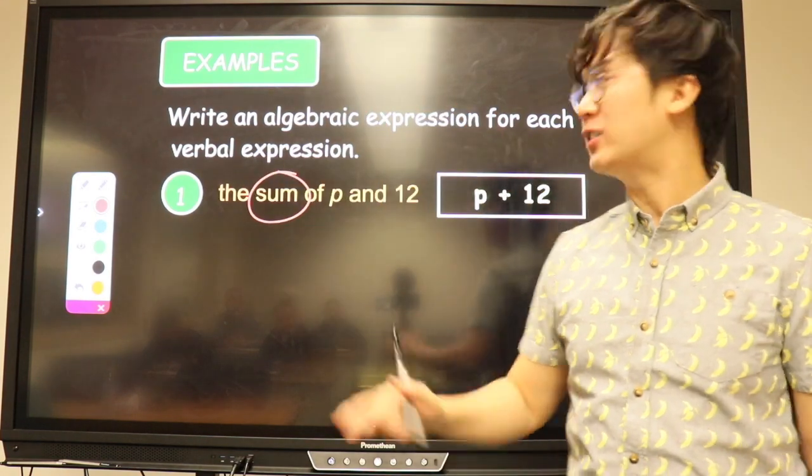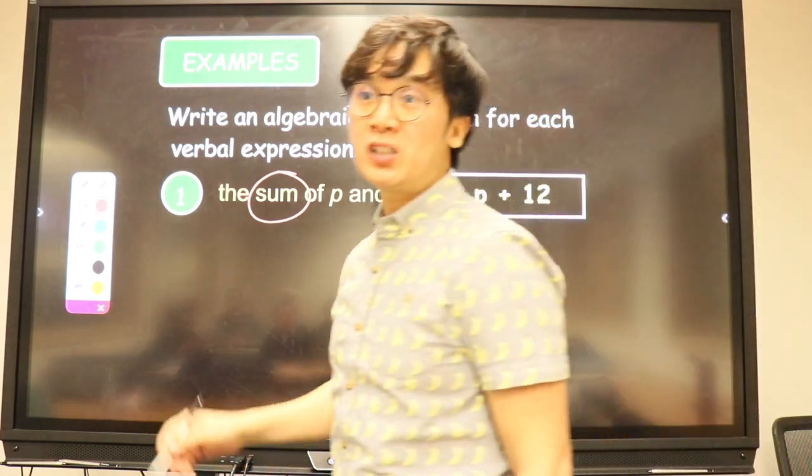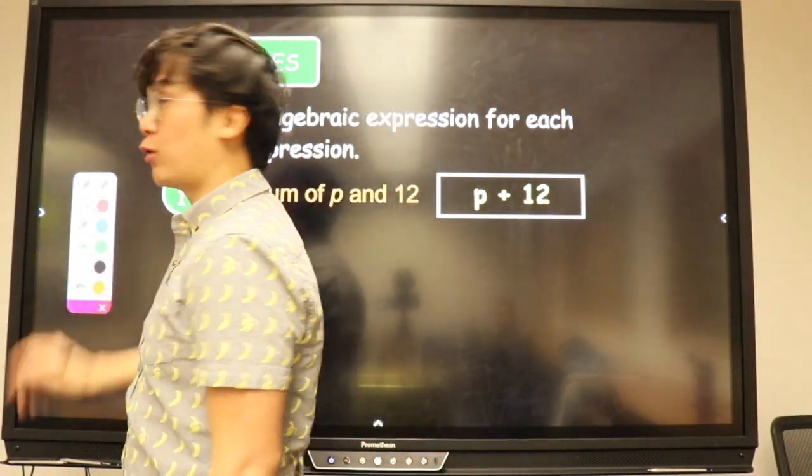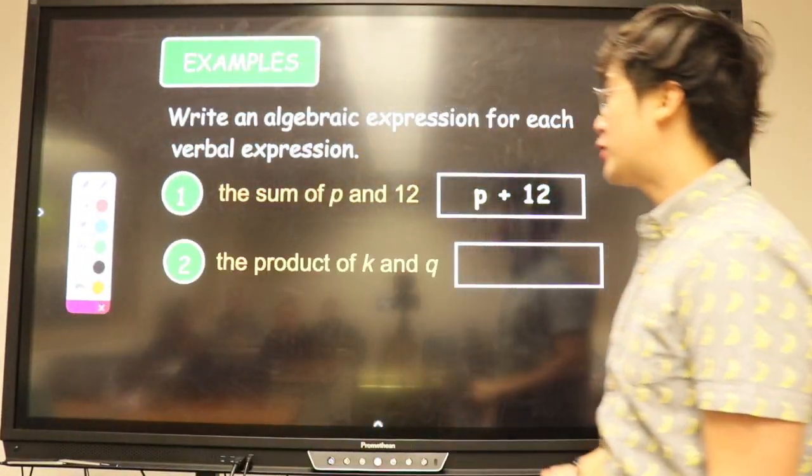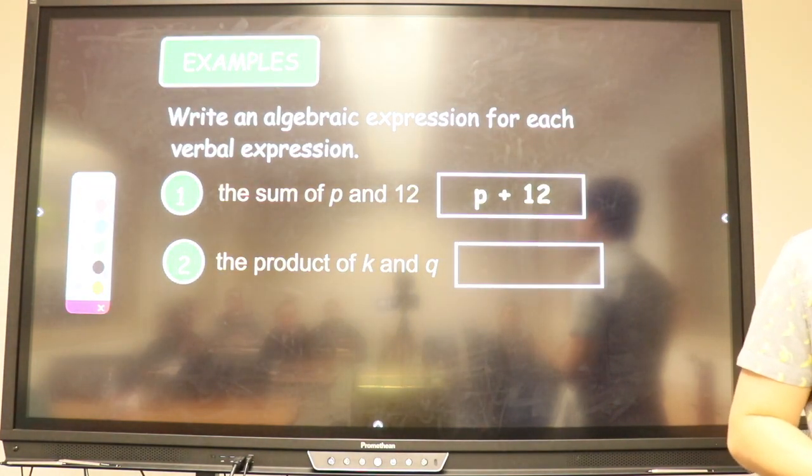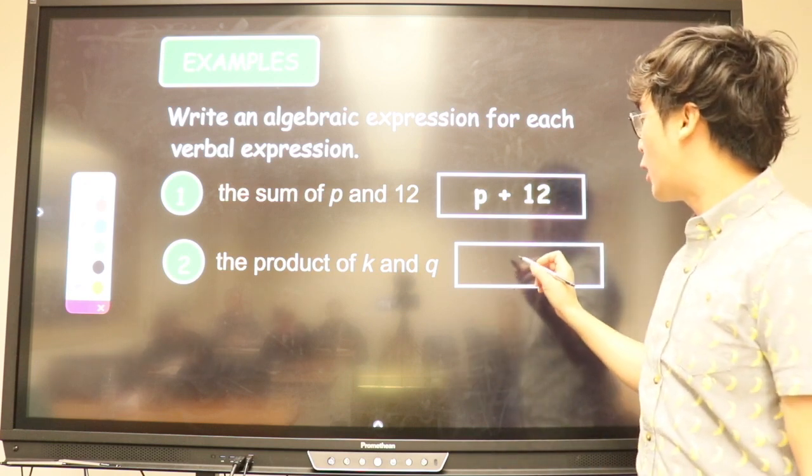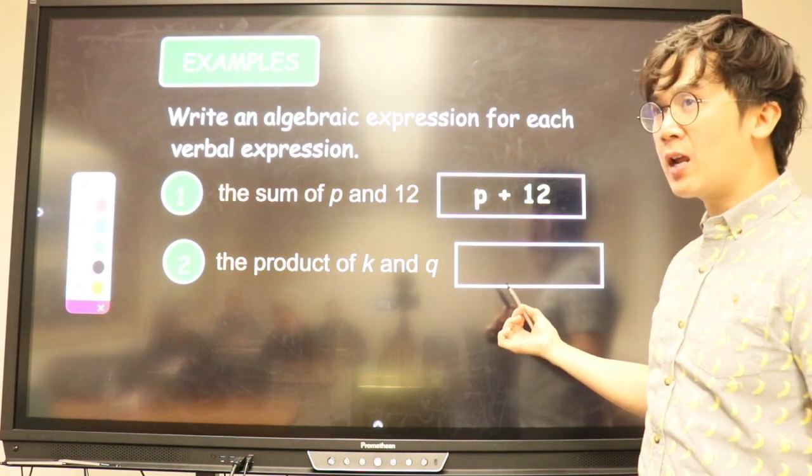Translate verbal descriptions into mathematical equations so you can use what you just learned in solving equations. If I have 'the product of k and q,' how am I going to write it in a math expression? k times q. And how are we going to write it in mathematical form?